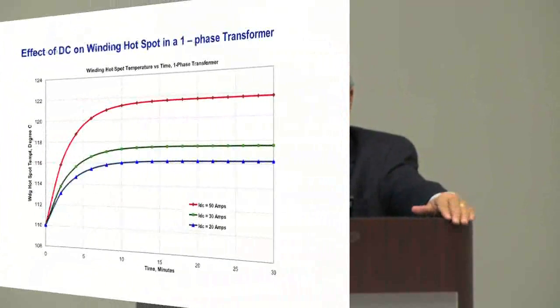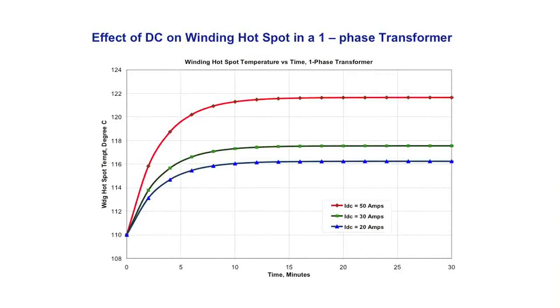Transformers designed such that when the core saturates and the leakage flux pattern changes, high winding circulating currents result. The old shell form designs had this characteristic — those are the designs that overheated in 1989 at Public Service Electric and Gas.